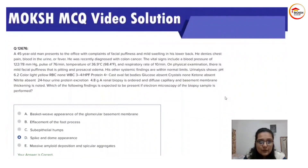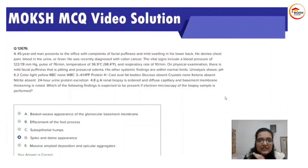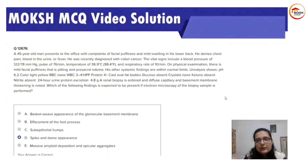Spike and dome appearance is seen with membranous nephropathy, which causes nephrotic syndrome in adults. One more point favoring this answer is the patient's history of colon cancer. Any solid tumor or systemic disease like SLE or rheumatoid arthritis would favor membranous nephropathy or membranoproliferative nephropathy.